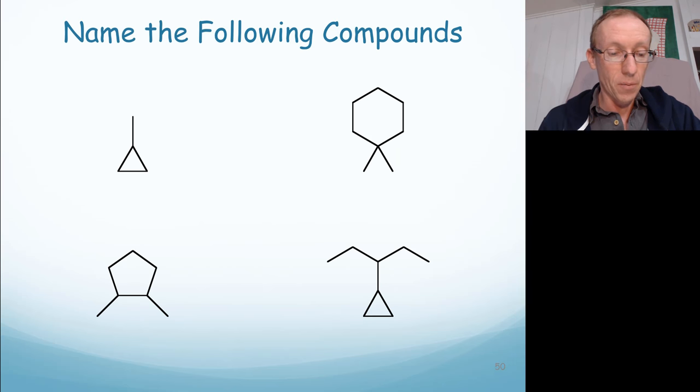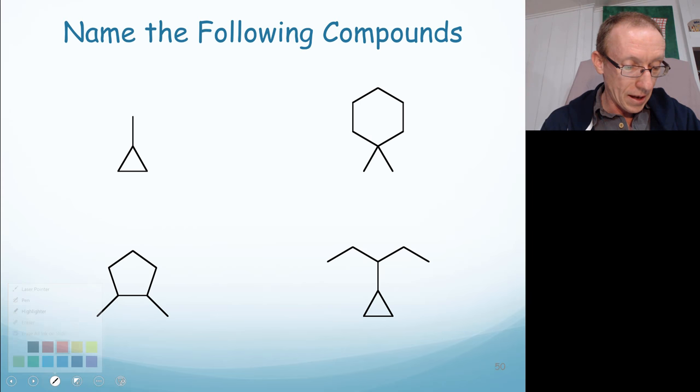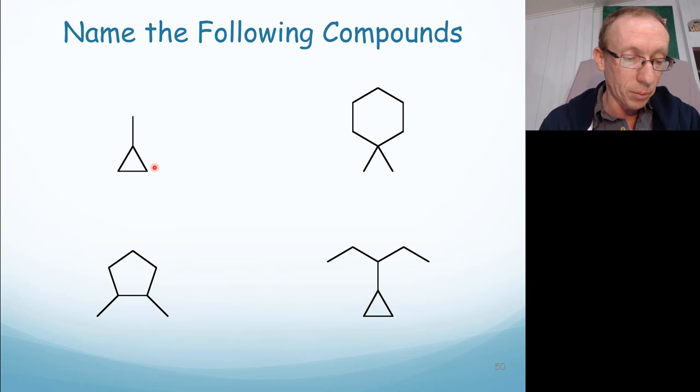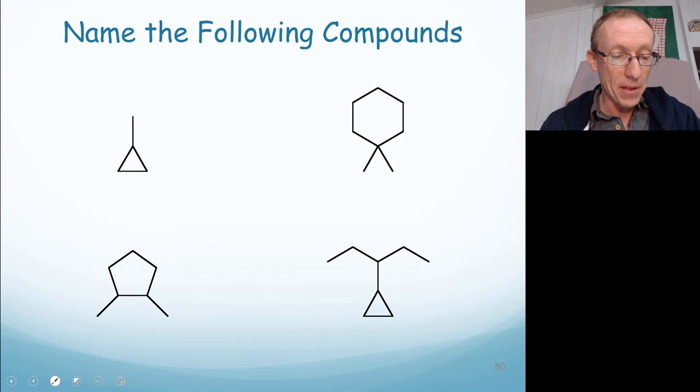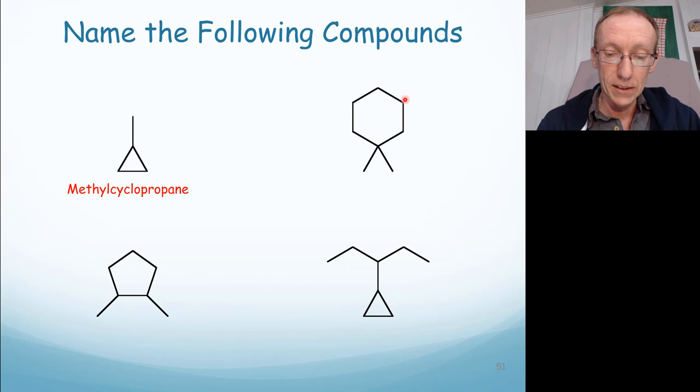Okay, so here's a few more. The first one we've got here is a cyclopropyl group. This is a three-membered ring, so cyclopropyl, and it has a methyl group attached to it, so it's just methylcyclopropane. The next one, we've got a six-carbon ring system, so it's a cyclohexane. We've got two methyl groups.